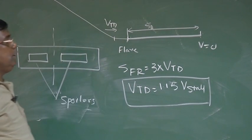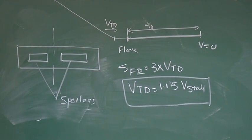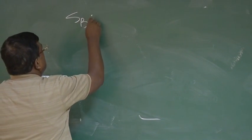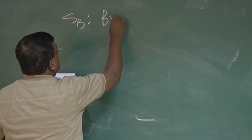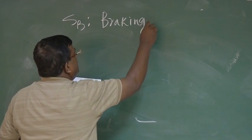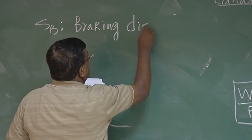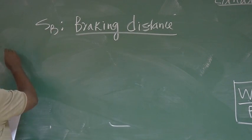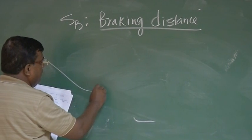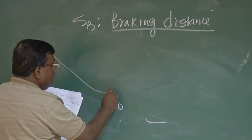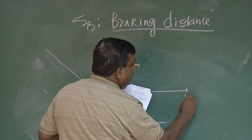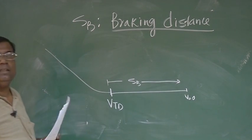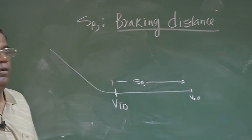This is the understanding. Now, let us see how can I calculate S_B, that is our next exercise. So, S_B is termed as braking distance. Just come like this, flare like this and from here, which is V touchdown to V equal to 0. I have to find out what is this distance S_B. Go back to class 6th or 7th. How would I solve this problem?